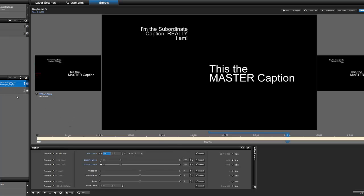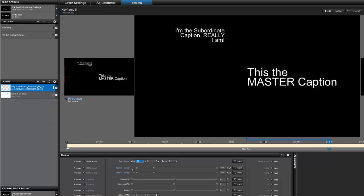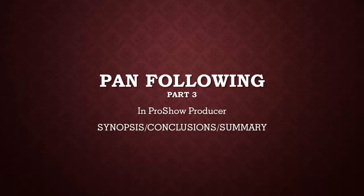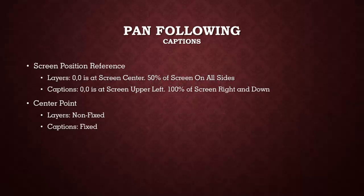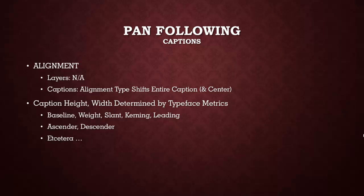That pretty much covers this segment of pan following. Let's recap what we've covered in Part 3. Captions address the screen differently than layers — layers start at the screen center, captions at the upper left corner. Layers have a non-fixed center point; captions have a fixed center point that can't change. Even though a caption may change its alignment, it shifts the caption left or right and the center point follows with it. Caption height and width is determined by the typeface metrics, and changing the typeface can result in a considerably different width or height.